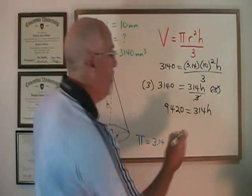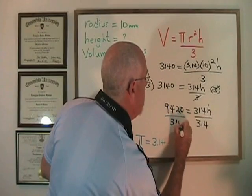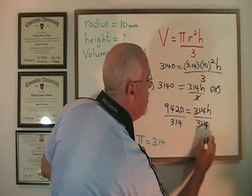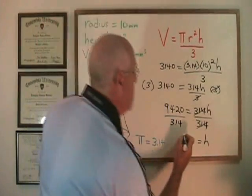And now when I divide both sides by 314, these cancel. My h is isolated. 9420 divided by 314 is equal to 30.